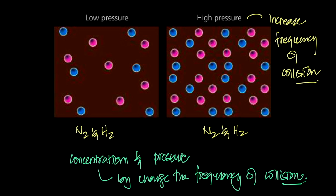Surface area also increases collision frequency — we'll cover that in the next class. As a recap: in collision theory, particles must touch to collide, they must collide in the right orientation, and they must have the minimum activation energy (activation energy). When all three conditions are met, you have a successful collision. Not all collisions are successful — only those with minimum activation energy and the right orientation. By increasing either collision frequency or the proportion of successful collisions, we can make reactions faster or slower. That's the lesson for the second class in this chapter.